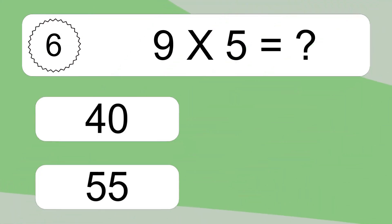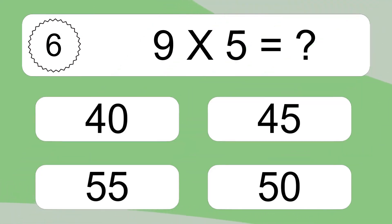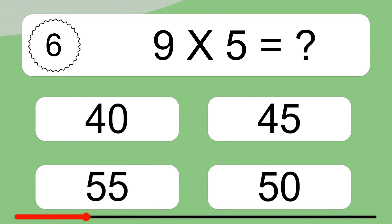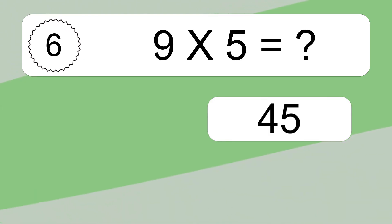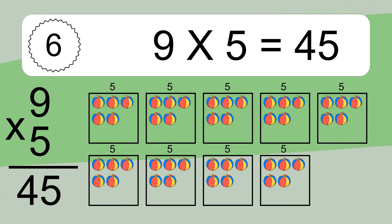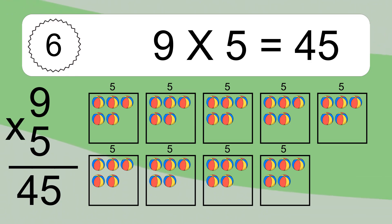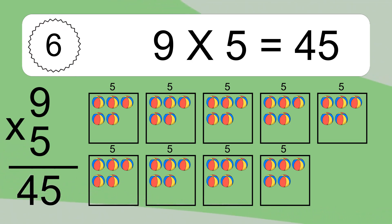9 times 5 equals what? 9 times 5 equals 45. We have 9 boxes, and each box has 5 colorful balls inside. If you count all the balls in all the boxes together, you will have 9 times 5 balls. This equals 45 balls.